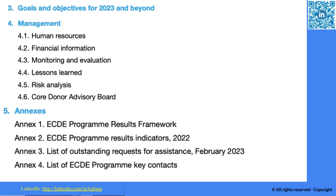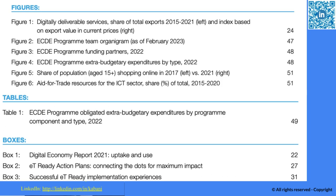In chapter four you will also learn about the core donor advisories. Finally, there are appendices where you can access information about the program results framework, program result indicators for 2023, a list of outstanding requests for assistance received in February 2023, and a list of key contacts — all of which will help you understand the report in full context.